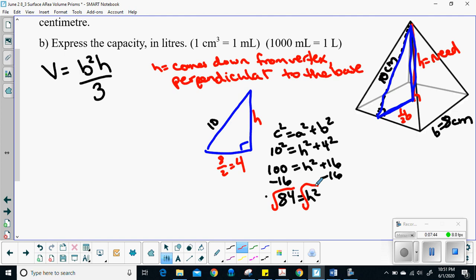So let's see. C squared equals A squared plus B squared. So my hypotenuse is 10. 10 squared equals H is one of my small sides, plus 4 is my other small side. So let's see. That gives me 100 equals H squared plus 16. Rearrange a little bit here. I'm so sorry. I keep way too many tabs open.